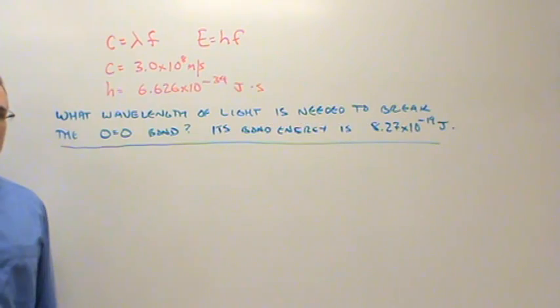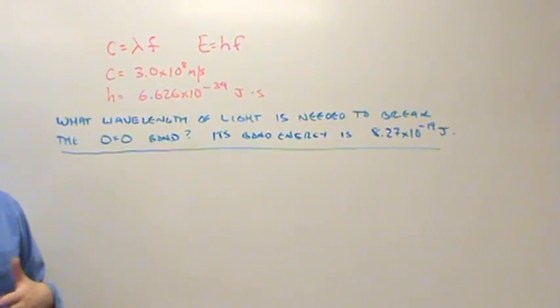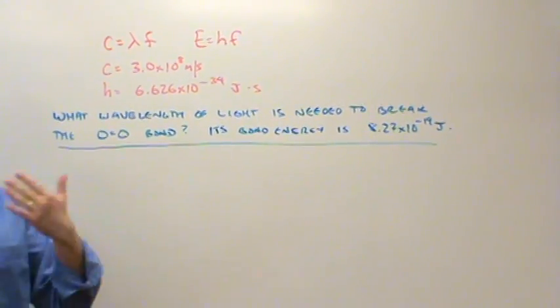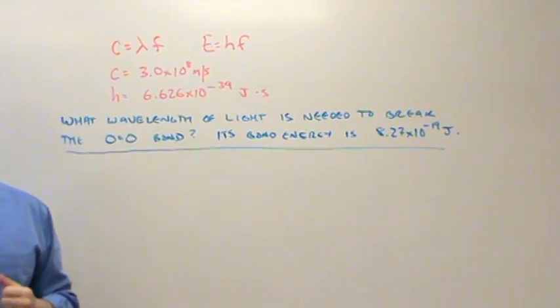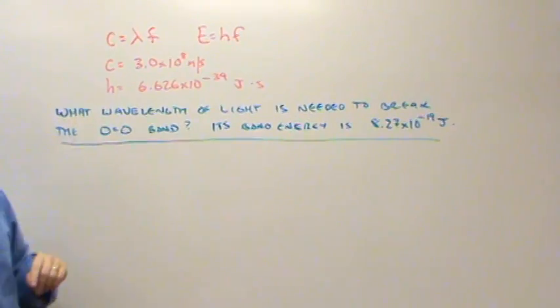So we really have two calculations here. In the first one, we're going to change the given bond energy of that oxygen into frequency, and then we're going to use frequency to convert to wavelength using the wavelength-frequency relation for light. We've got a few constants here: the speed of light and Planck's constant, H.